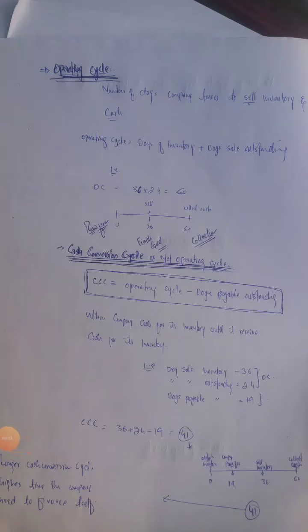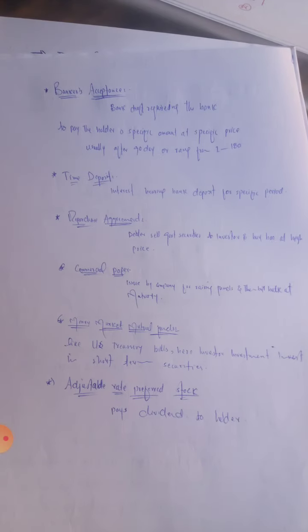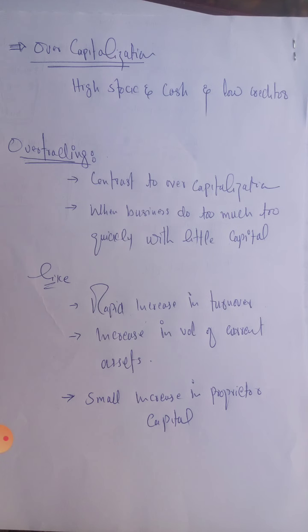Allah Ar-Rahman Ar-Rahim. Dear students, Asalaamu Alaikum. In today's lecture we will discuss the operating cycle, the cash conversion cycle or net operating cycle of a company. After that we will go forward to the daily cash position of that company, and we will also discuss banker acceptance, over-capitalization, and over-trading of a company.